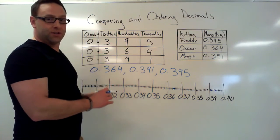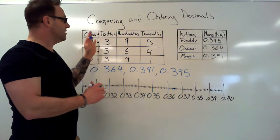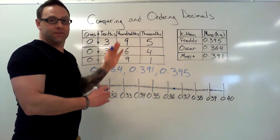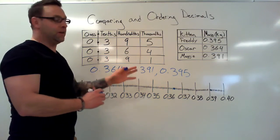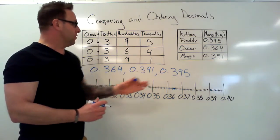The easiest way to do that is to put it into a place value chart, just like I've done here. Zero point three nine five, zero point three six four, and zero point three nine one are easy to order from least to greatest when we have them laid out nicely in a place value chart.